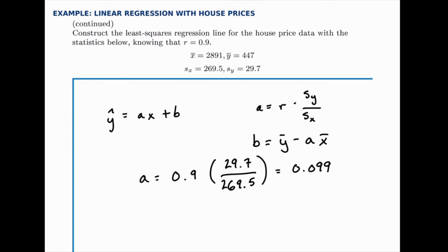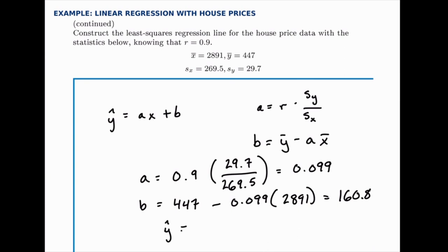We need that for the second part. To calculate b, we'll take ȳ, 447, minus a, 0.099, times x̄, which is 2891. For b we get 160.8, which means our regression equation looks like ŷ = 0.099x + 160.8.